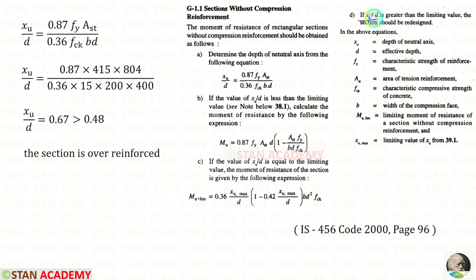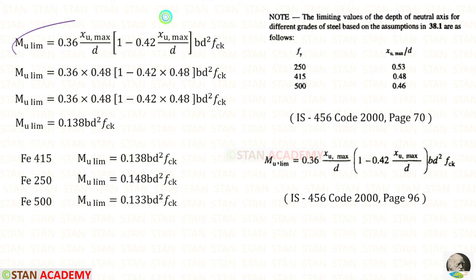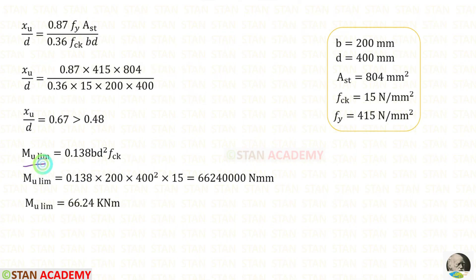When XU/D is greater than the limiting value, the section should be redesigned. In this case we still use the limiting moment of resistance formula. For Fe 415 this gives a limiting moment of resistance of 66.04 kNm.